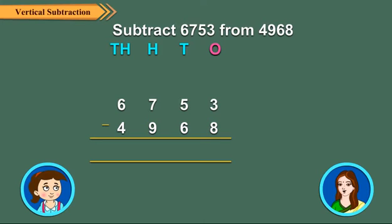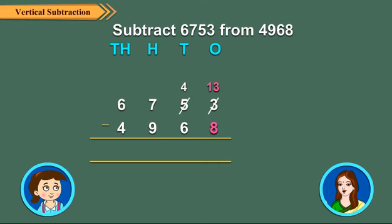Subtracting the 1's. Here, 8 is greater than 3. So, from the 10's column we borrow 1 ten, leaving behind 4 10's. Now, 10 plus 3 1's is equal to 13 1's. So, 13 1's minus 8 1's is equal to 5 1's.